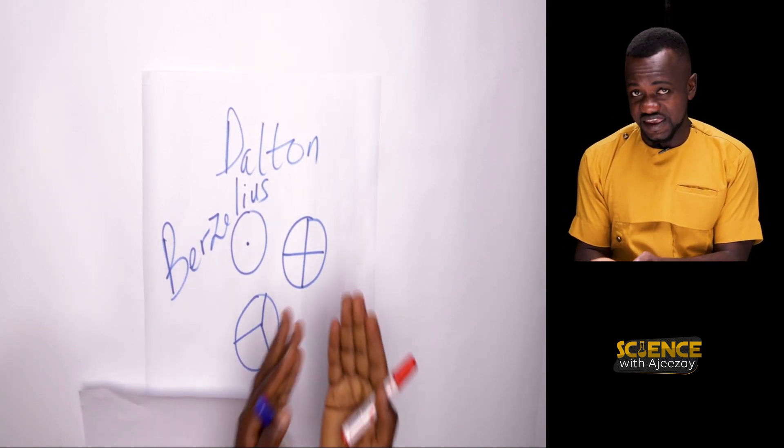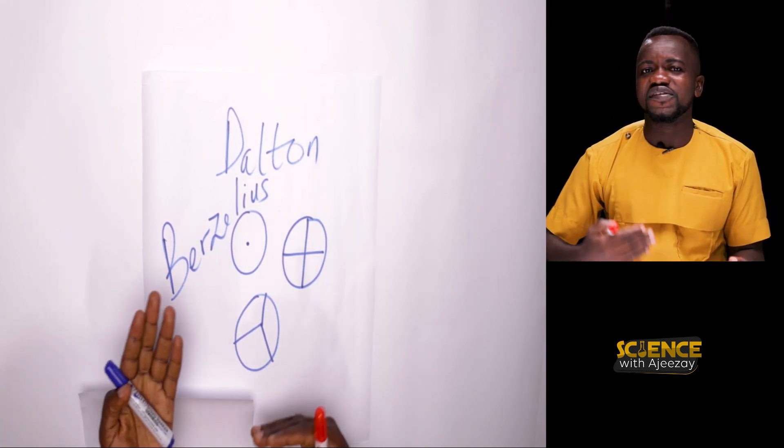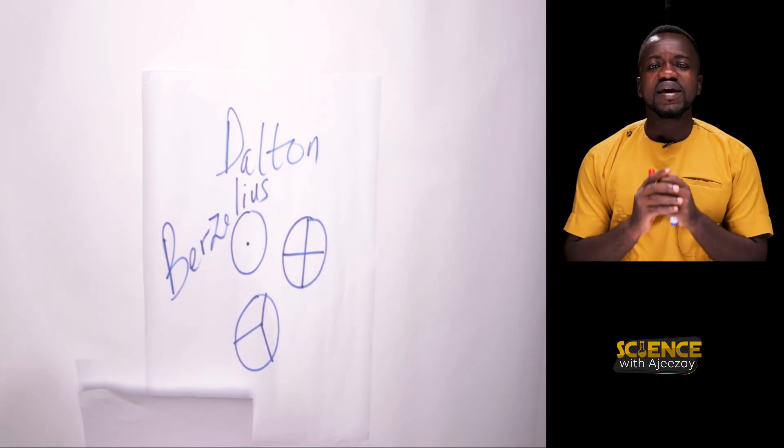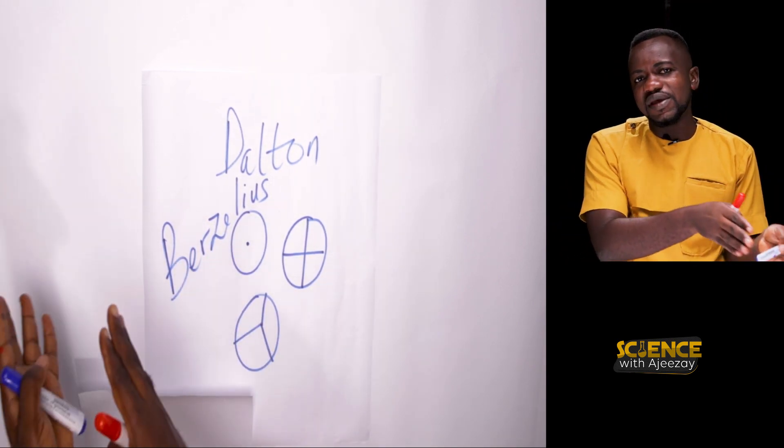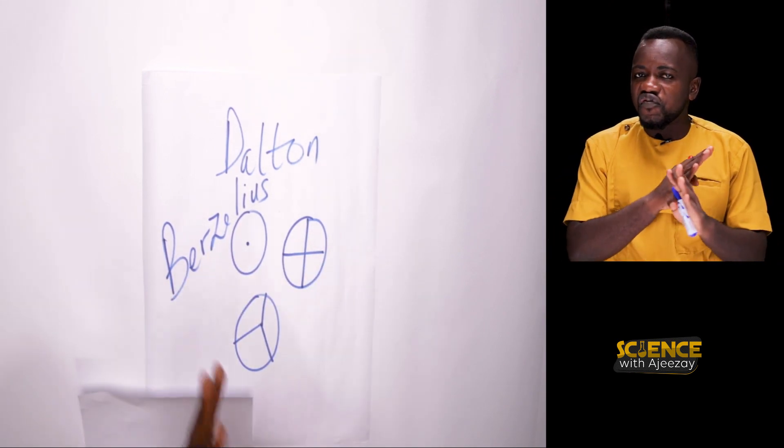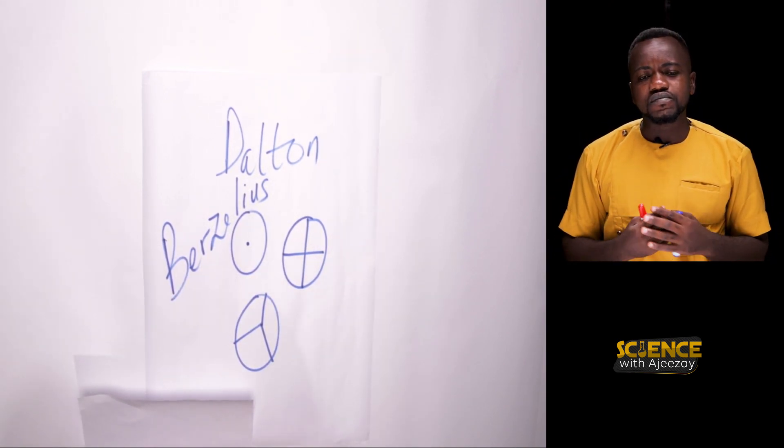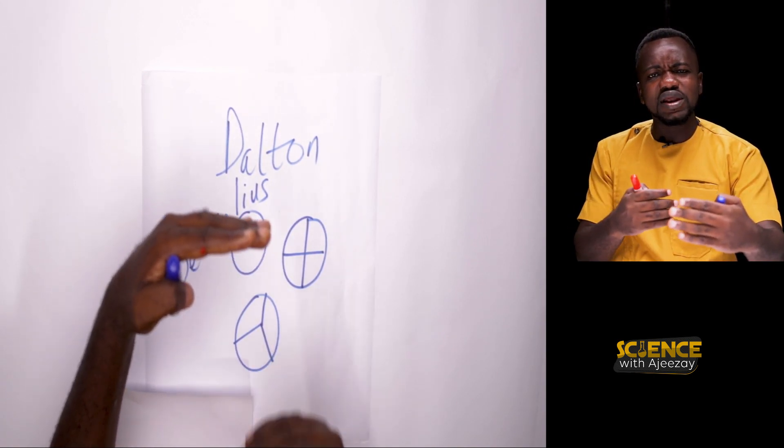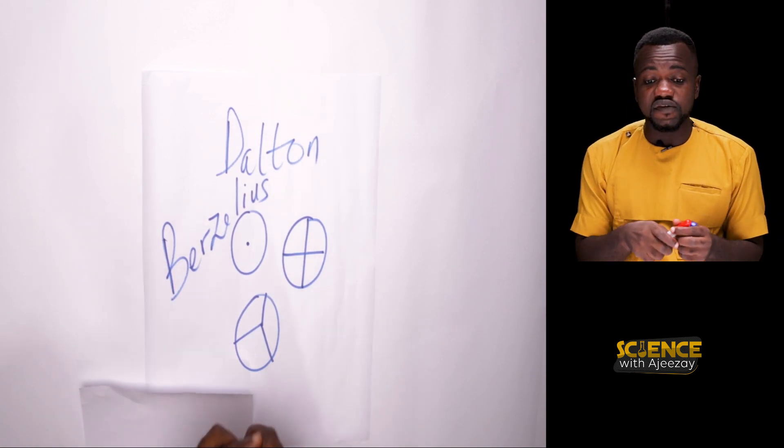So hydrogen is H. Helium is He. Lithium is Li. Carbon is C. So the first two elements in the name of the element as its symbol or the first letter. And then he realized that at the point you were getting some elements looking like each other symbol-wise.